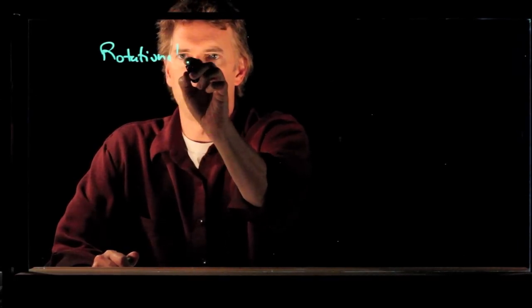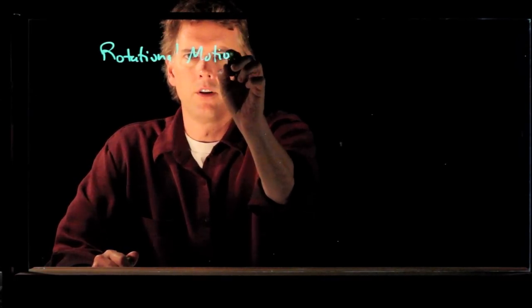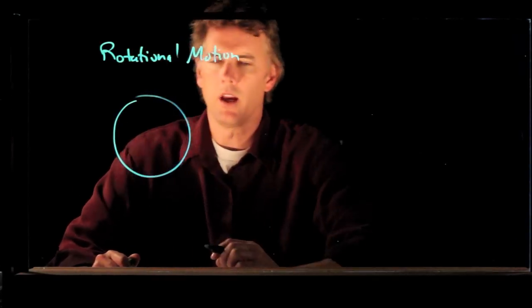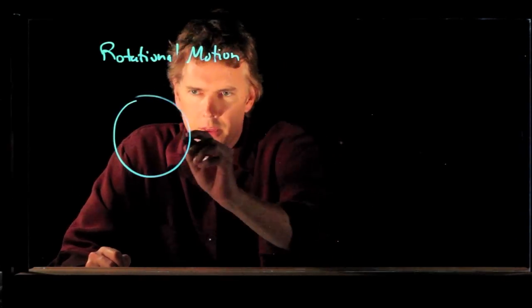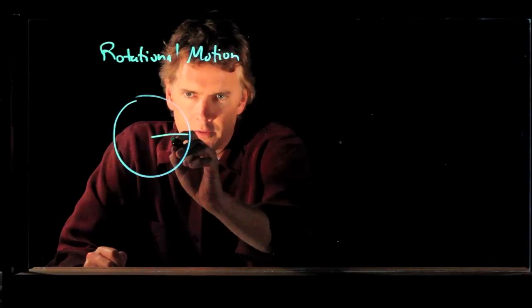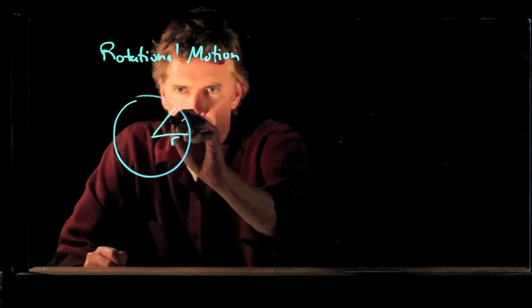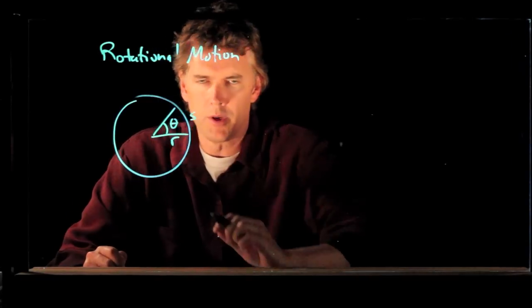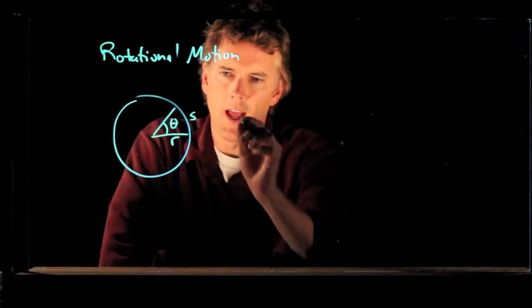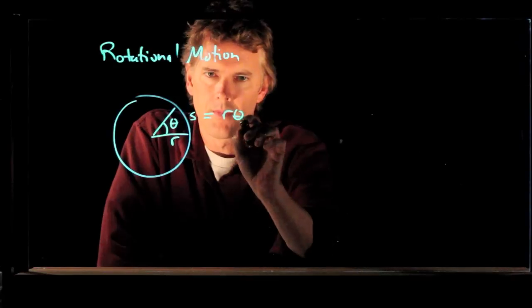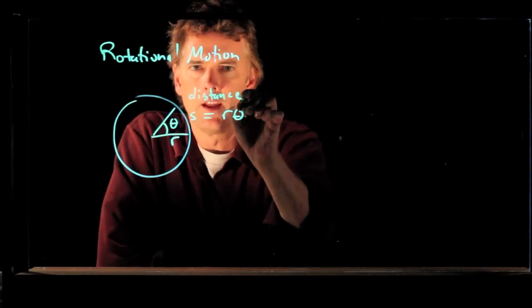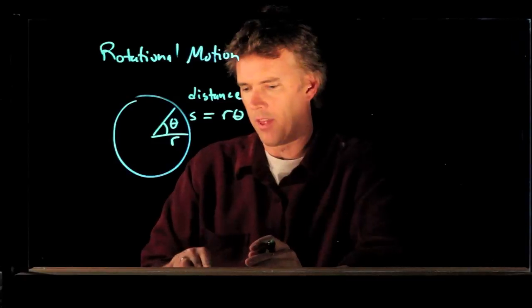Let's go back to our picture for the motion in a circle. If we think about the radius of this circle R and we rotate through an angle theta, then how far have we gone? We've gone a distance S and what we know is S, that distance, the arc length, is just equal to R times theta.